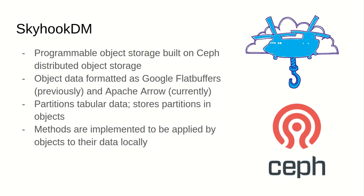Skyhook is built on Ceph, which is a distributed object storage, and leverages programmable storage capabilities to enhance data management within the storage layer of Ceph. We have migrated to Apache Arrow from Google Flatbuffers for object data formatting because of the promising performance of the former. Skyhook essentially partitions the data and stores these partitions in objects, which thereby apply the implemented methods locally on the data.